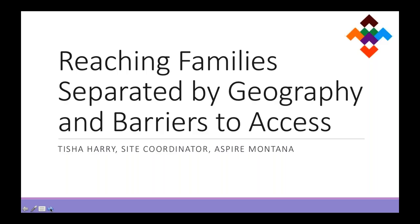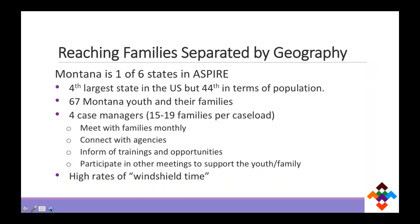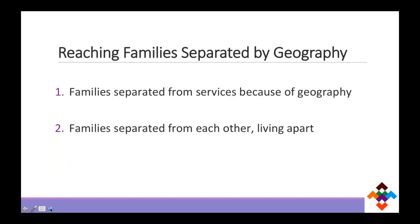My name is Tisha Harry. I am the site coordinator for Aspire in the state of Montana. I will be talking about reaching families separated by geography and the barriers to access that go with that. Aspire Montana is just one of six rural states in the Aspire project. Montana itself is the fourth largest state in the U.S. with a very small population of just over a million people. We have four case managers to cover the entire state, but because of our geography, we have very high rates of what we call windshield time. In some cases, our case managers have to travel three and a half hours in one direction just to meet with a single family.